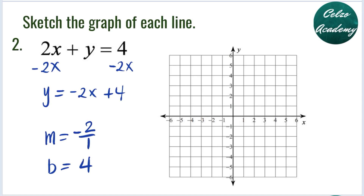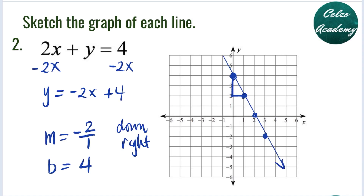To graph this, we begin with the Y-intercept 4. From this point, we graph the slope negative 2 over 1 — negative 2 means 2 down and then 1 to the right. From positive 4, we go 2 down and 1 to the right, repeating to add more points for accuracy. Using a straight edge, connect the points to draw the line — this is the graph of 2X plus Y equals 4, or Y equals negative 2X plus 4.